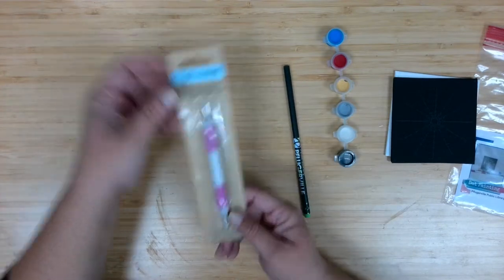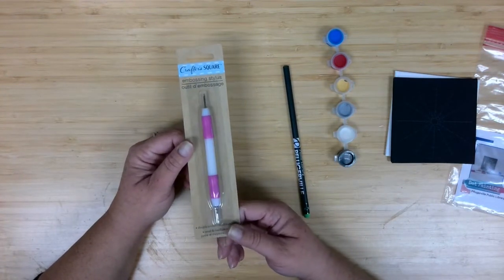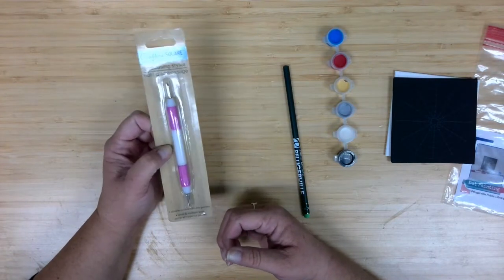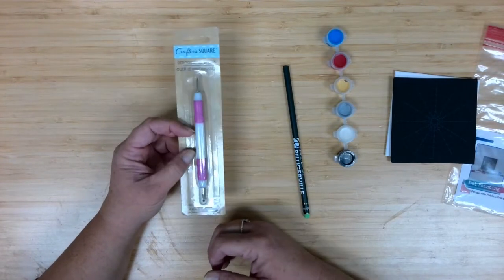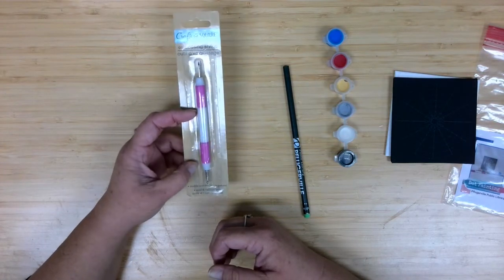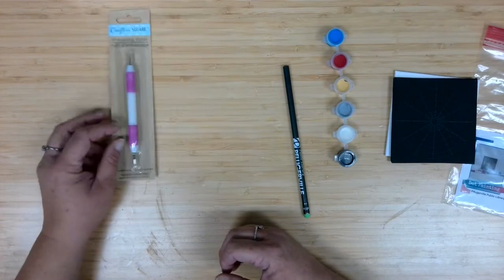Additionally, you are getting an embossing stylus. These we picked up at the Dollar Tree, just a real simple dotting tool. There are a ton of other tools out there that you can use, even some things you'll find around the house which we'll talk about in the crafting.